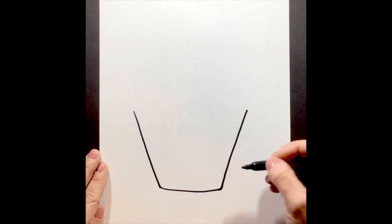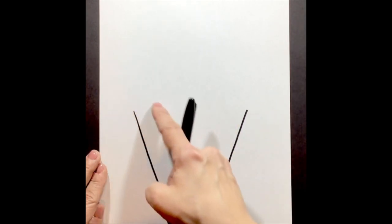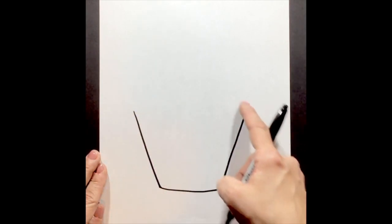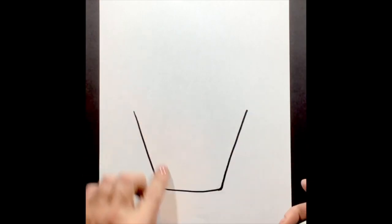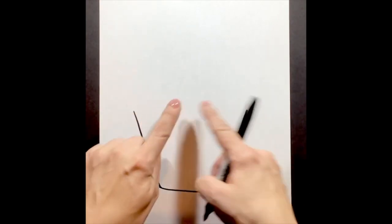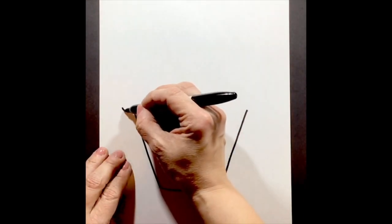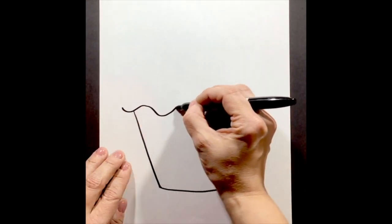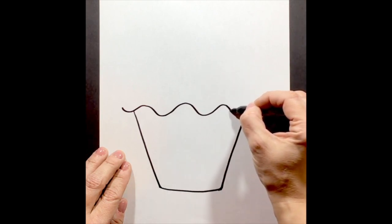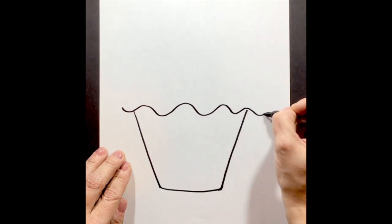Our step number two, we're going to add a wavy line right at the top, and this is going to be the base of our cupcake. And now we're going to start creating the icing layers on our cupcake. So now we're going to start, remember, we're making a curvy line all the way across.